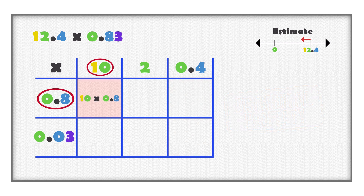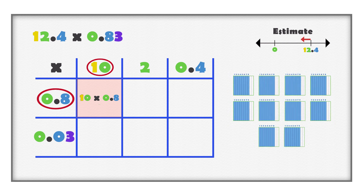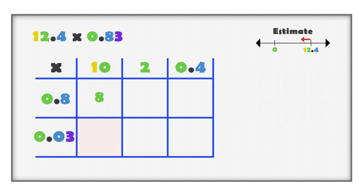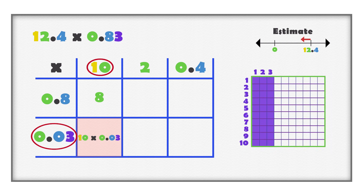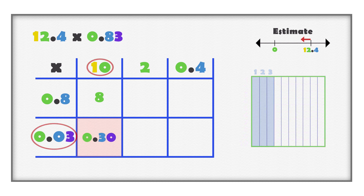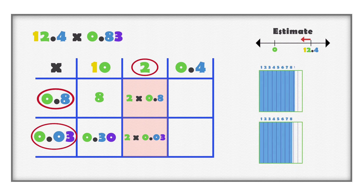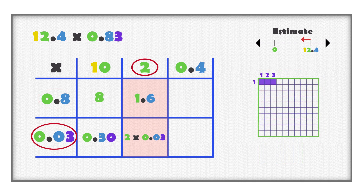Multiply ten with eight tenths. This means ten groups of eight tenths, or eighty tenths. One group of ten tenths is one whole, so eighty tenths is eight wholes. Ten multiplied with eight tenths is eight. Multiply ten with three hundredths: ten groups of three hundredths is thirty hundredths, which is the same as three tenths. Multiply two with eight tenths and then with three hundredths. Two multiplied with eight tenths is sixteen tenths, or one and six tenths. Two multiplied with three hundredths is six hundredths.